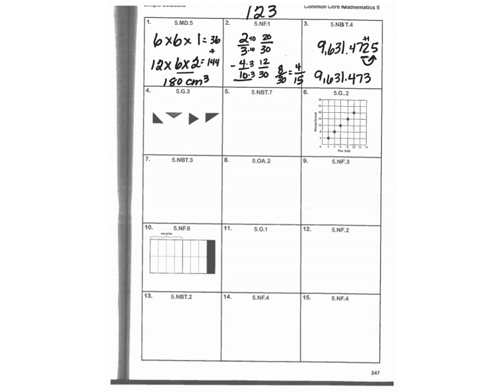Number four, which triangle has no line of symmetry? That's going to be that last one there.